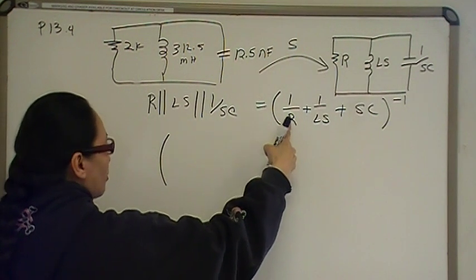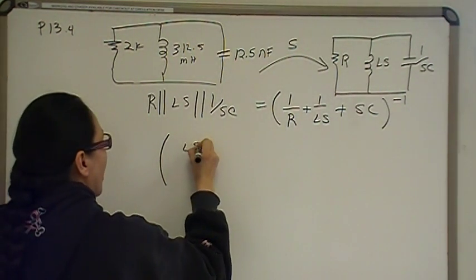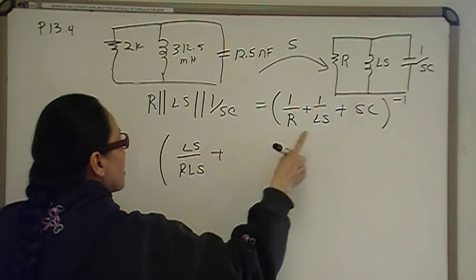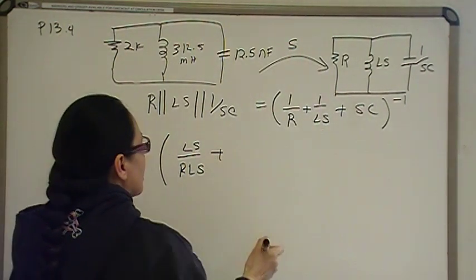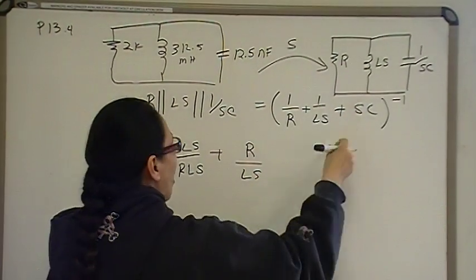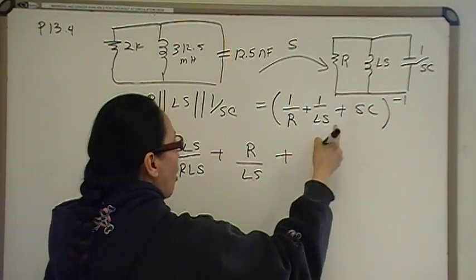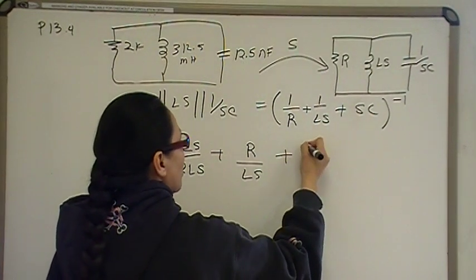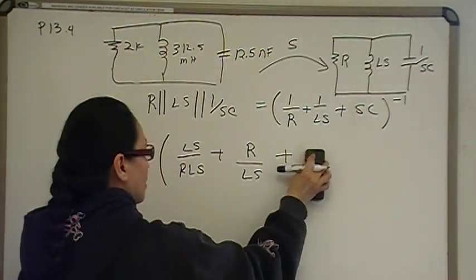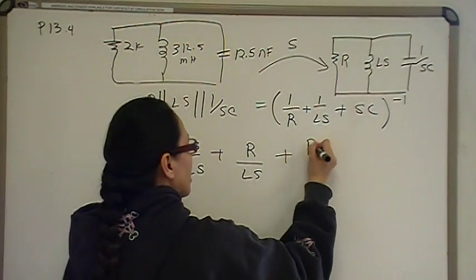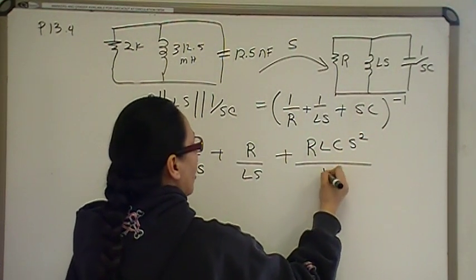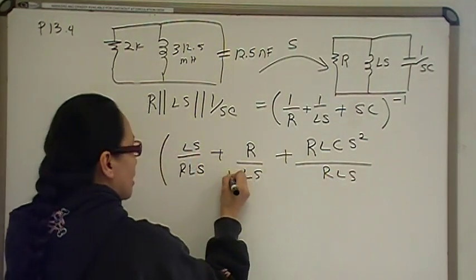So, this term, 1 over R, is missing an LS, so it's going to be LS over RLS, plus this term, 1 over LS, is missing an R, so it's going to be R over RLS. And SC is missing RLS, so it's going to be RLSC times S squared over RLS. And I'm missing an R here.